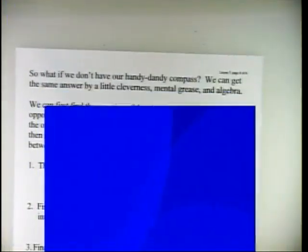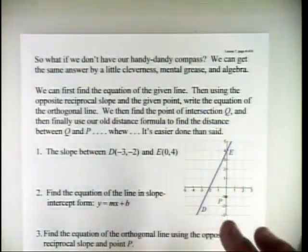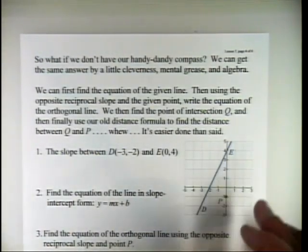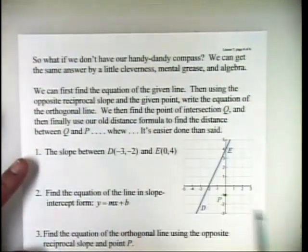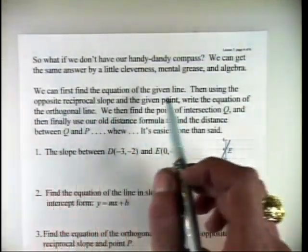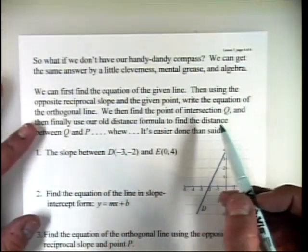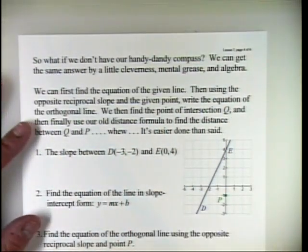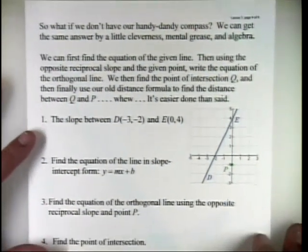What if we don't have that handy compass? We can get the same answer with a little cleverness and algebra. Here's the process: first, find the equation of the given line. Then, using the opposite reciprocal slope and the given point, write the equation of the orthogonal line. Then find the point of intersection Q, and finally use the distance formula to find the distance between Q and P. It's easier done than said.